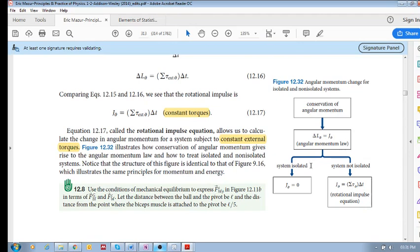If the system is isolated, then we know there's no external rotational impulse, which means your rotational impulse is zero, so delta L theta is zero. However, if there is an external rotational impulse, then the system is not isolated and there is a rotational impulse.